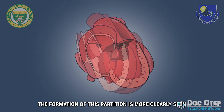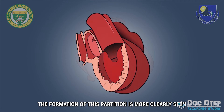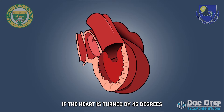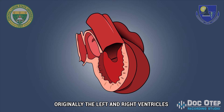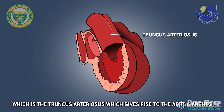The formation of this partition is more clearly seen if the heart is turned by 45 degrees. Originally, the left and right ventricles share a common outflow channel, which is the truncus arteriosus, which gives rise to the aortic arches.